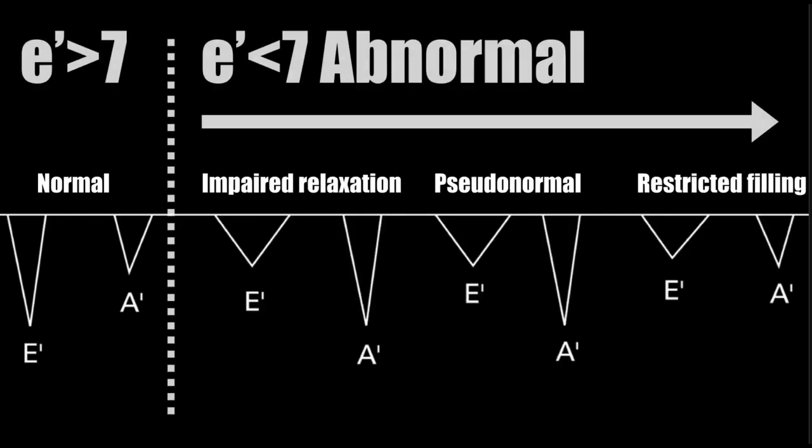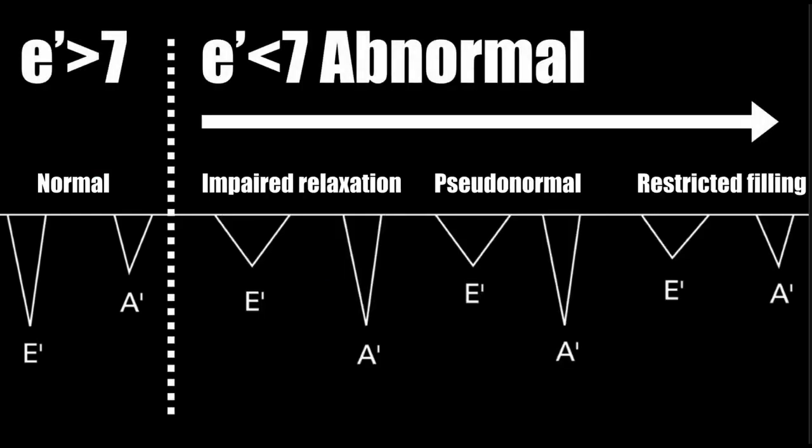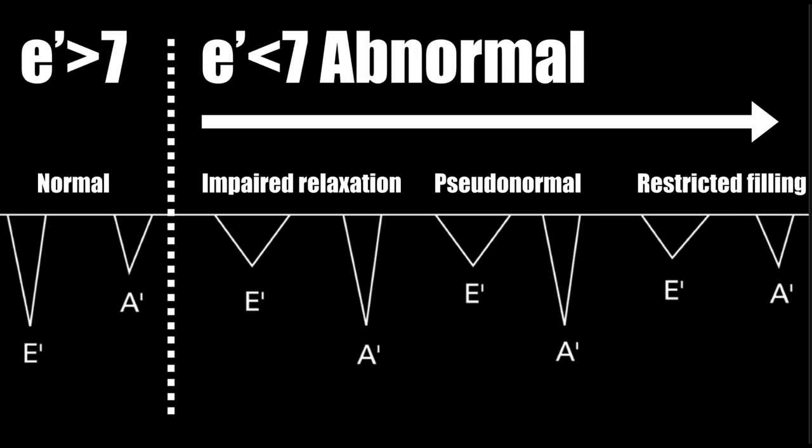What we're looking for here is an E prime wave and an A prime wave, measuring the velocity of the tissue during diastole. In normal function, the E prime wave is going to be greater than the A prime wave. As we progress to worsening function, the E prime wave becomes less than the A prime wave and will be less than 7. An E prime greater than 7 typically indicates normal diastolic function, while an E prime less than 7 suggests some abnormality, but doesn't necessarily imply increased filling pressures.